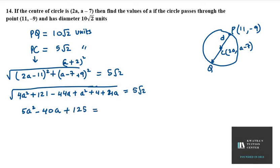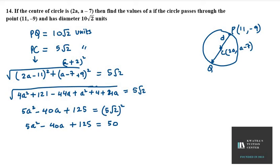On the right-hand side we have 5√2. Squaring both sides to remove the square root: the left-hand side becomes 5a² − 40a + 125, and the right-hand side becomes (5√2)² = 25 × 2 = 50.